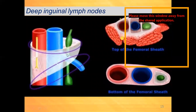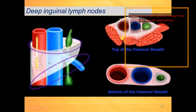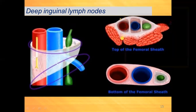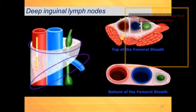In this diagram you can see the femoral sheath, which is funnel-shaped. The femoral vein and femoral artery are found inside the sheath. The green-colored structure represents the lymphatic and lymph node in the femoral canal. In the cross-section, you can find the lymph node, the vein, and the artery.